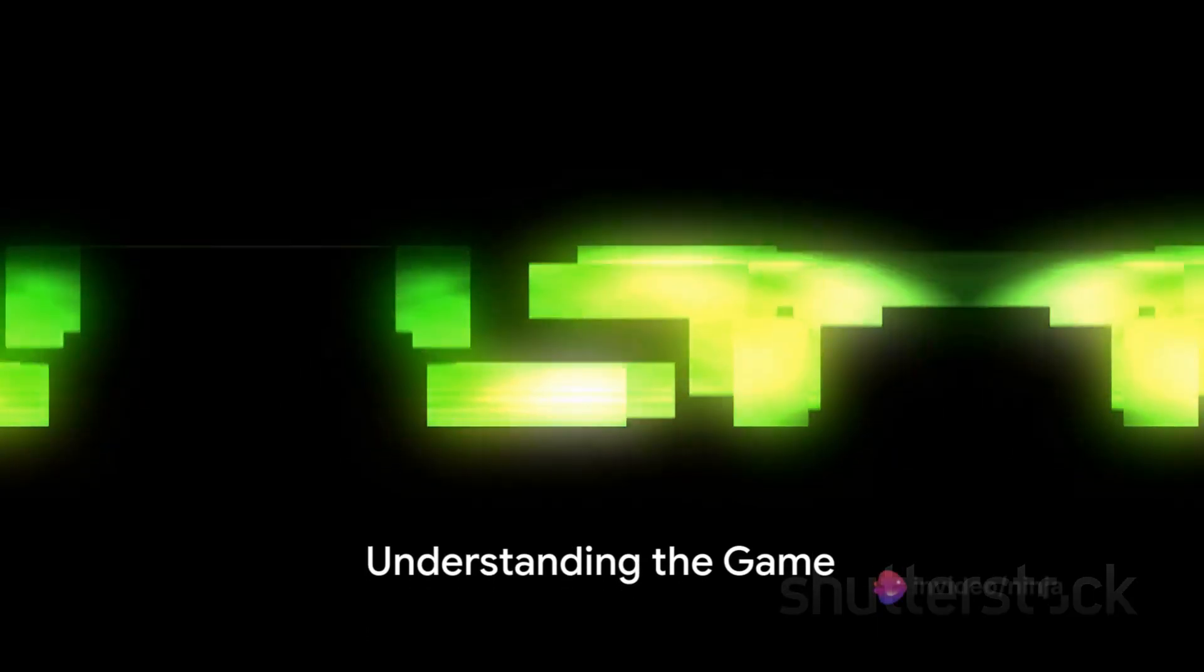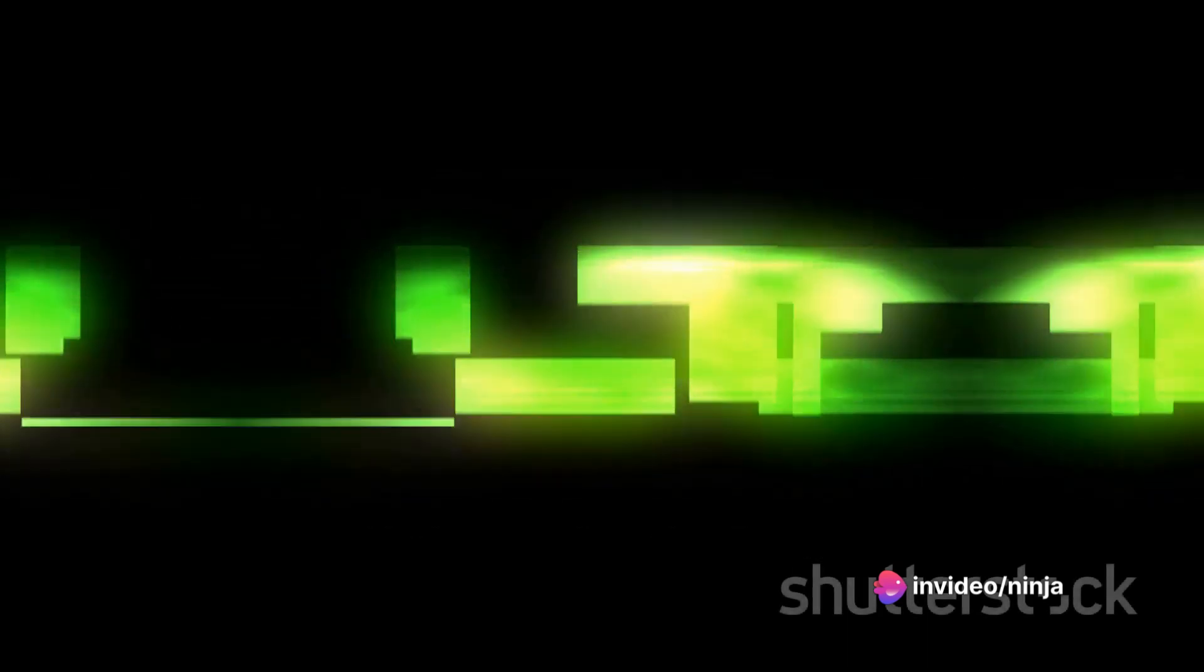Before anything else, understand the game. Tetris at its core is about completing lines with different tetromino shapes that fall at an increasing speed. The aim is to prevent the blocks from reaching the top of the screen. Sounds simple, right? But as any seasoned player knows, it's anything but.